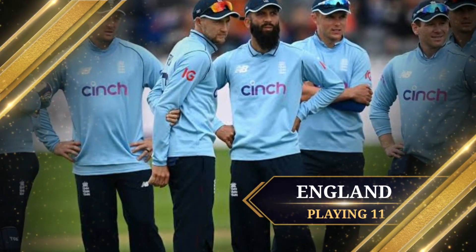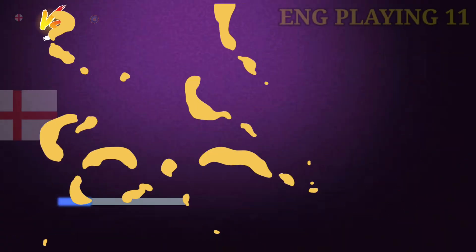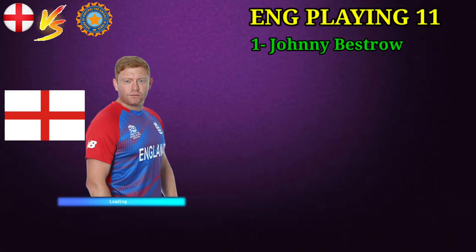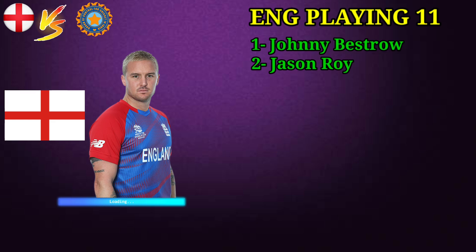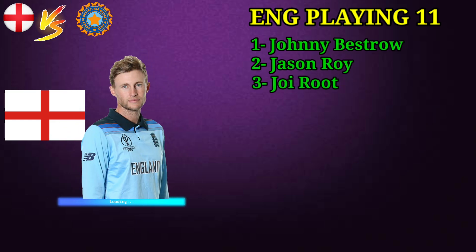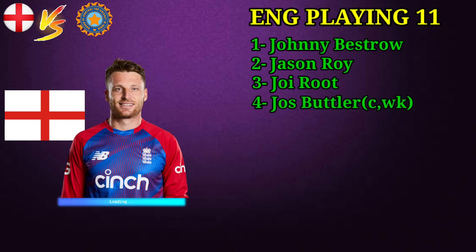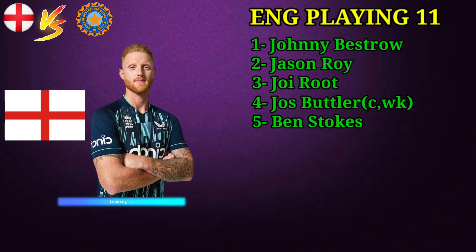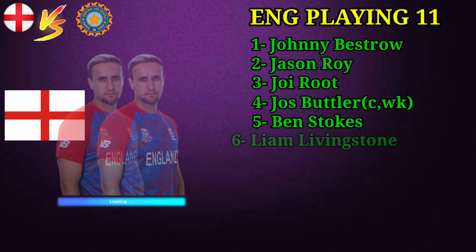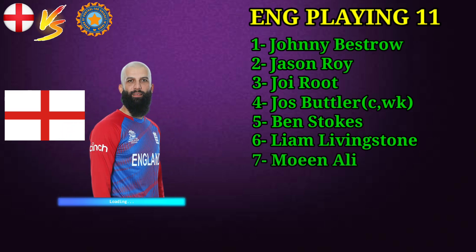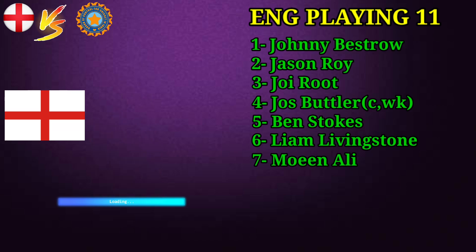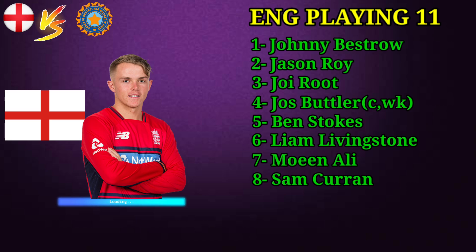Team England Final Playing 11 vs India. No. 1 Jonny Bastow, Right-handed Batsman. No. 2 Jason Roy, Right-handed Batsman. No. 3 Joe Roode, Right-handed Batsman. No. 4 Josh Butler, Captain and Batsman. No. 5 Ben Stokes, All-Downers. No. 6 Liam Livingstone, All-Downers. No. 7 Moeen Ali, All-Downers. No. 8 Sam Curran, All-Downers.